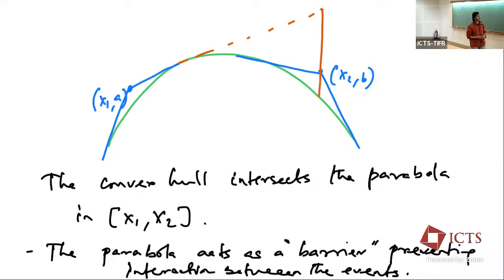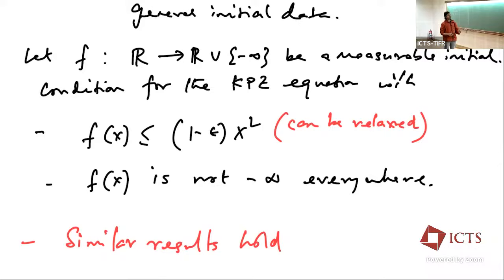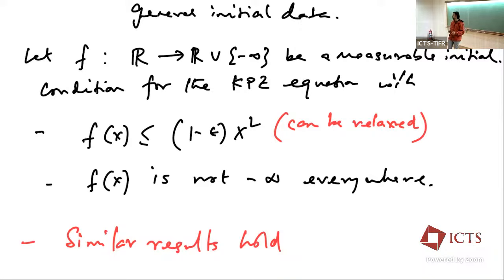Regarding general initial data: take any initial data F whose growth rate is slightly smaller than a parabola with coefficient one — the parabola of the KPZ height function has coefficient one. If the growth rate of the initial data is slightly less than one and it's not completely degenerate, the same results go through. This condition can be relaxed somewhat. We have described most of the results; now we'll discuss some key tools entering the proofs.